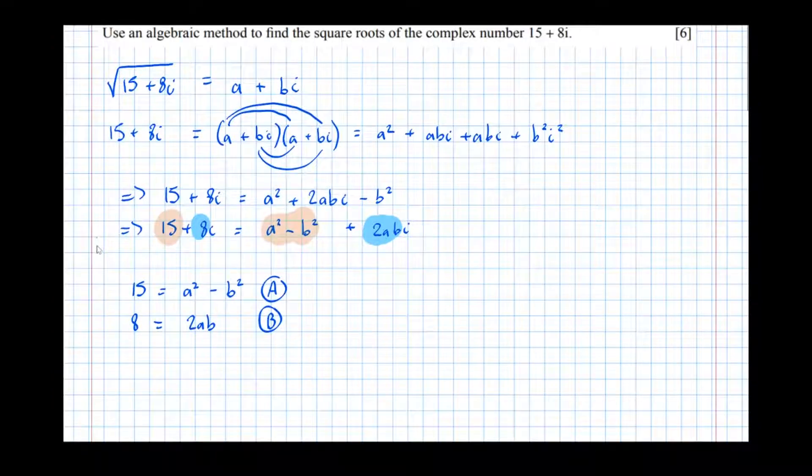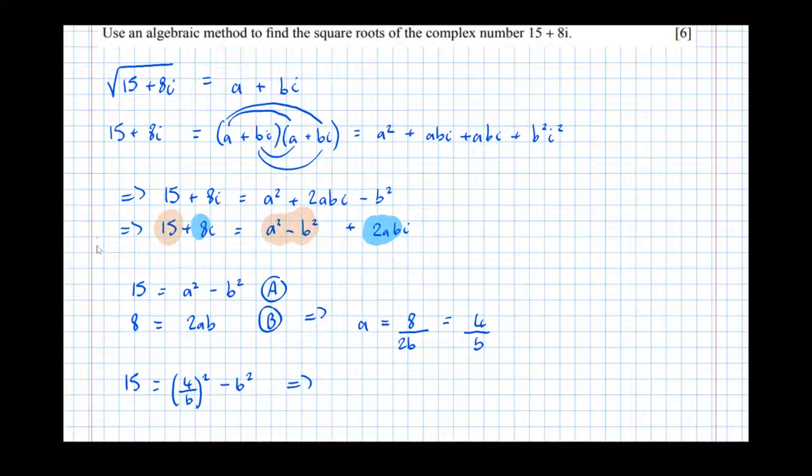Now we can see from this that B implies that a equals 8 over 2b equals 4 over b. And if we sub that now into the other equation, into A, we get 15 equals 4 over b squared, minus b squared, which means that 15 equals 16 over b squared minus b squared.